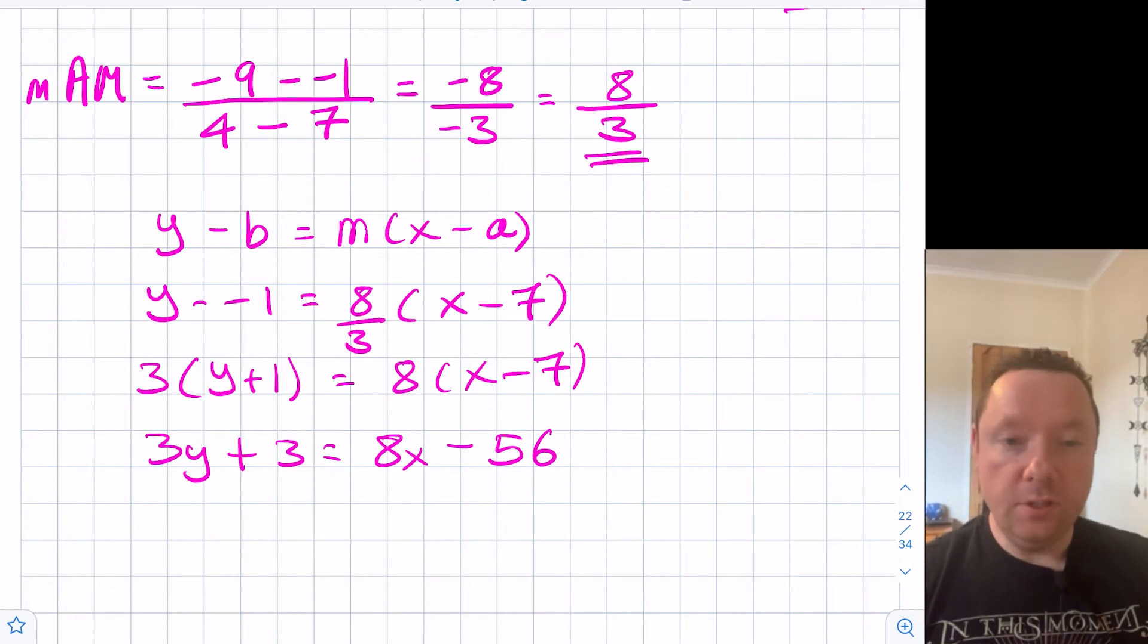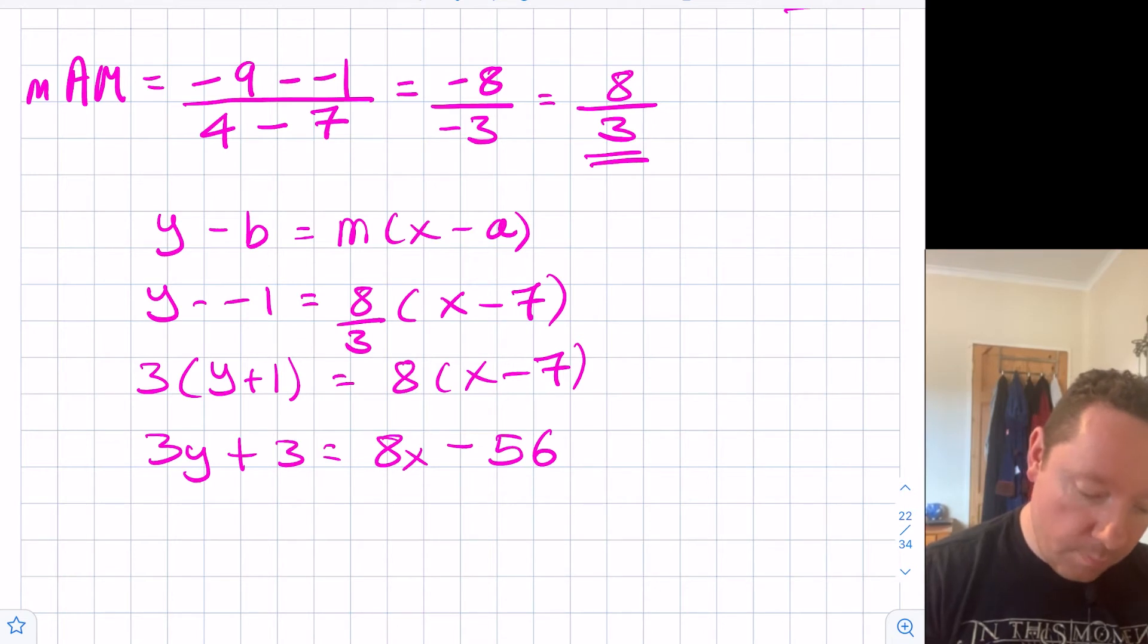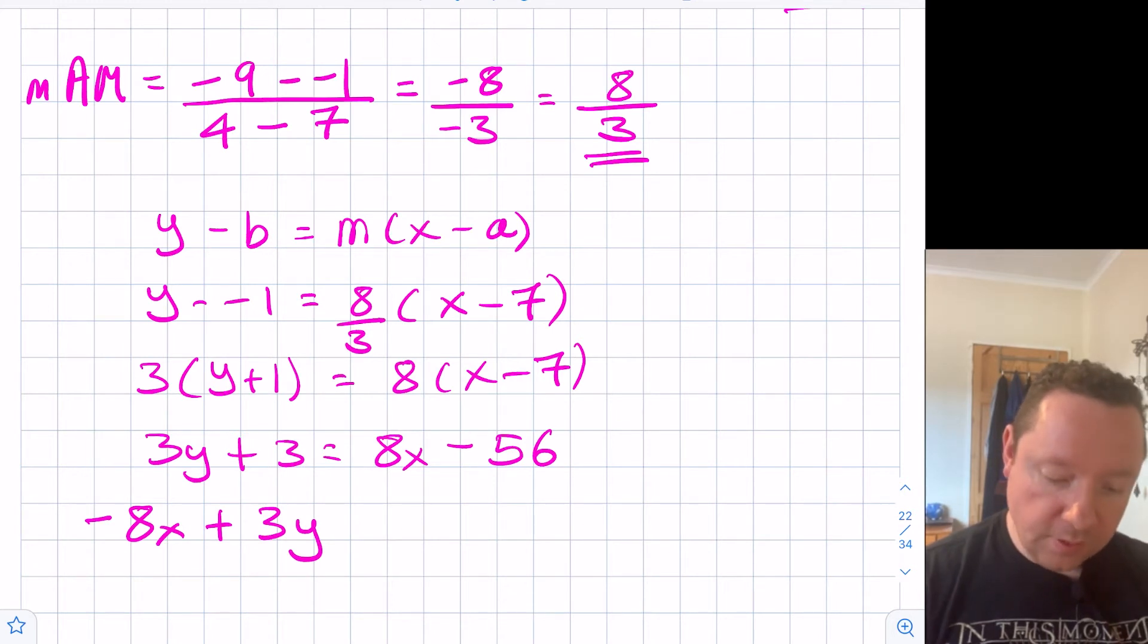I'll just take everything over to the left hand side in this case and make it equal to 0. So I've got -8x plus 3y, 3 plus 56 is 59, and that equals 0. So that's one form you could leave it in.